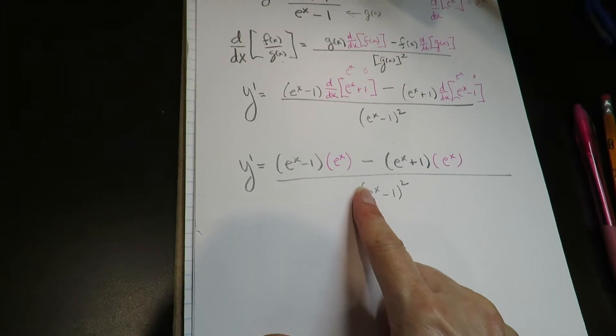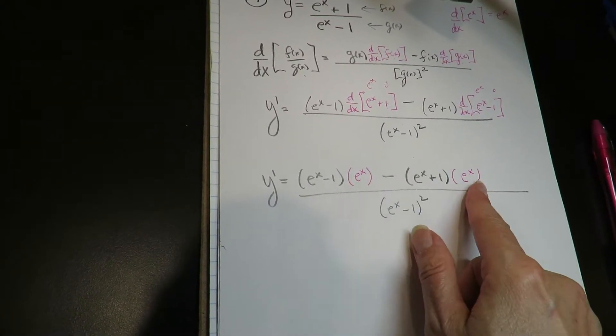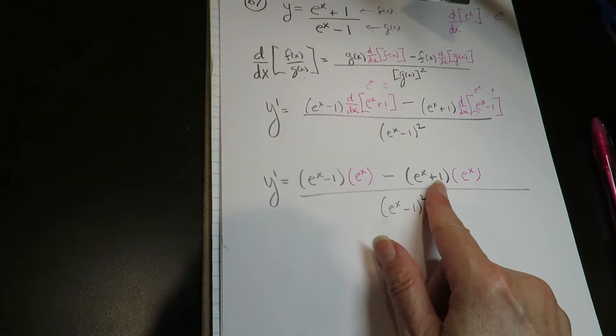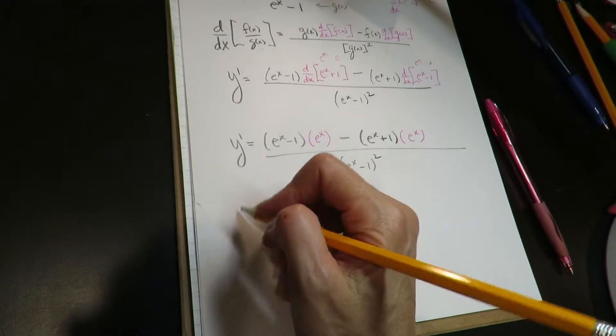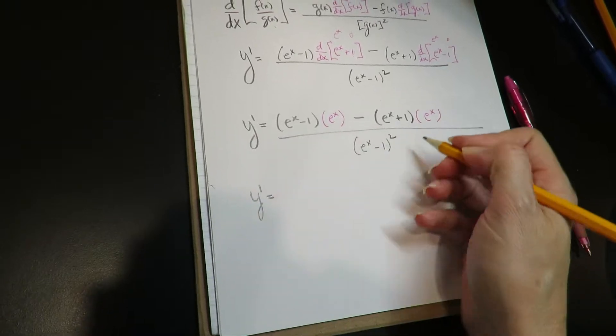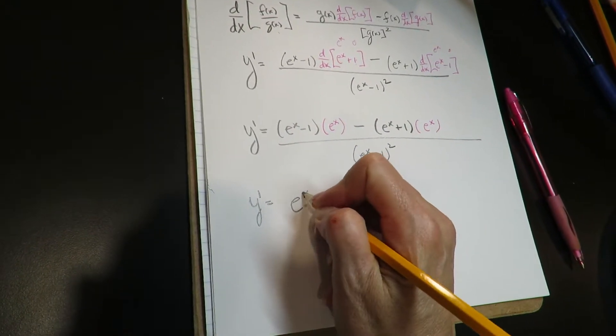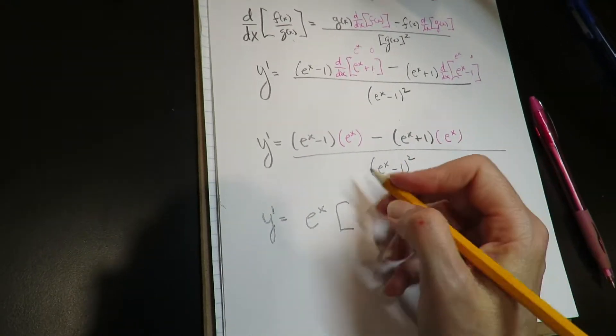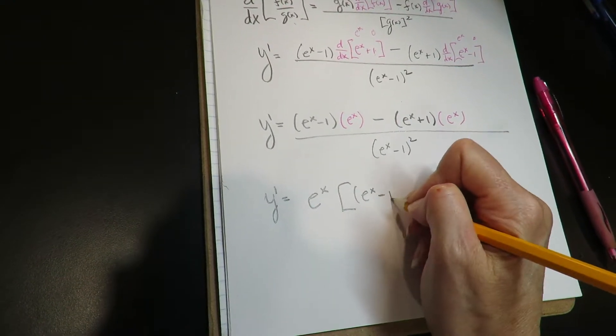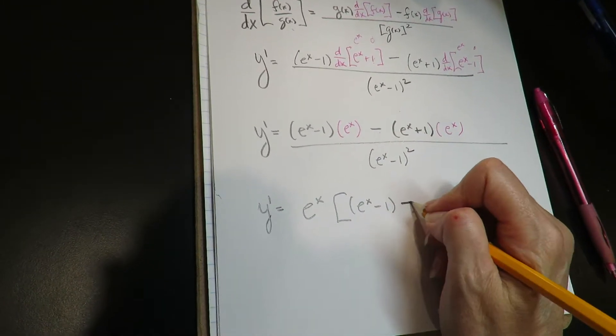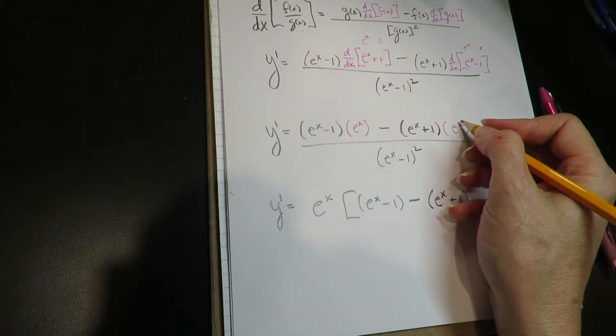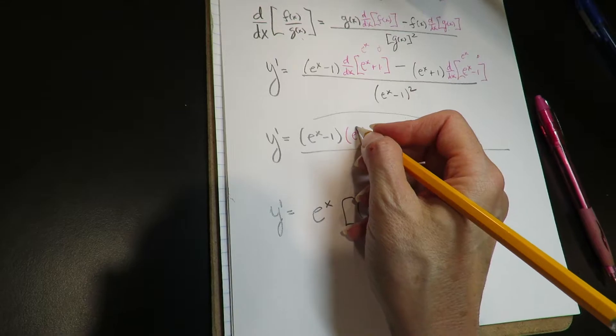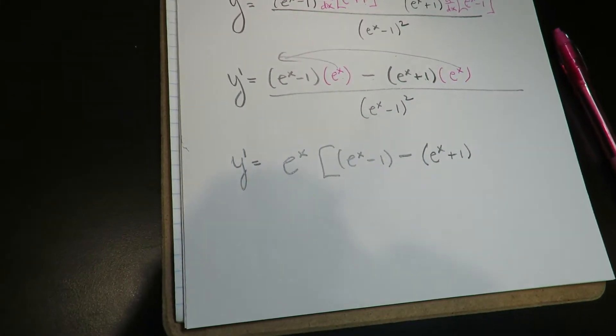Now, it depends how you want to simplify this. Some students will factor out the e to the x first and then distribute the negative. I sort of feel like that might be the easiest way to see the answer. So I'll factor out the e to the x and I'll be left with, in the front, e to the x minus 1 and in the back, minus e to the x plus 1.